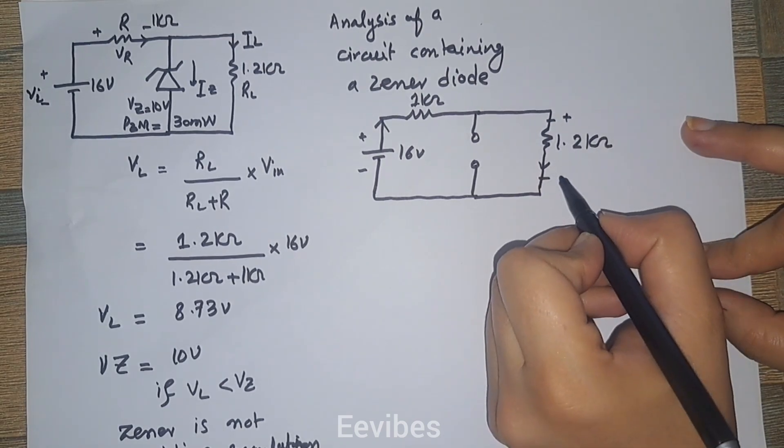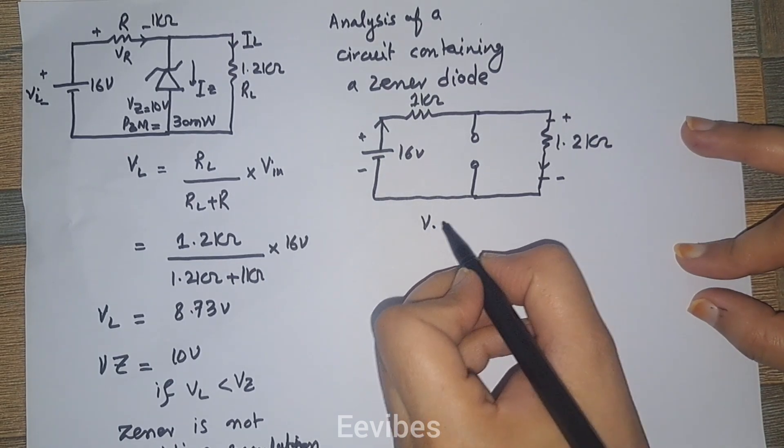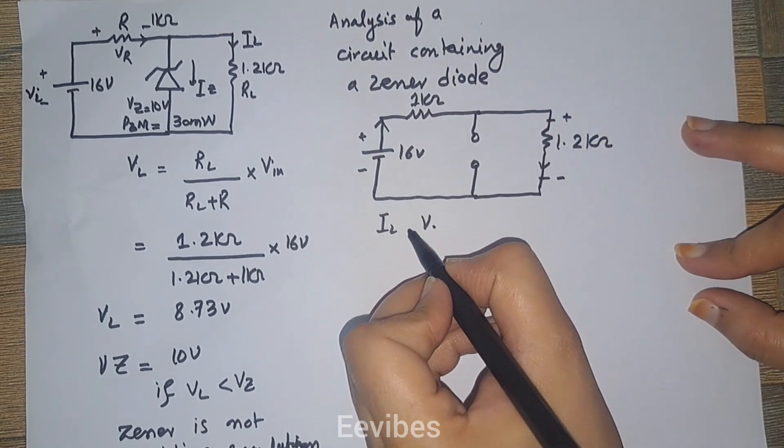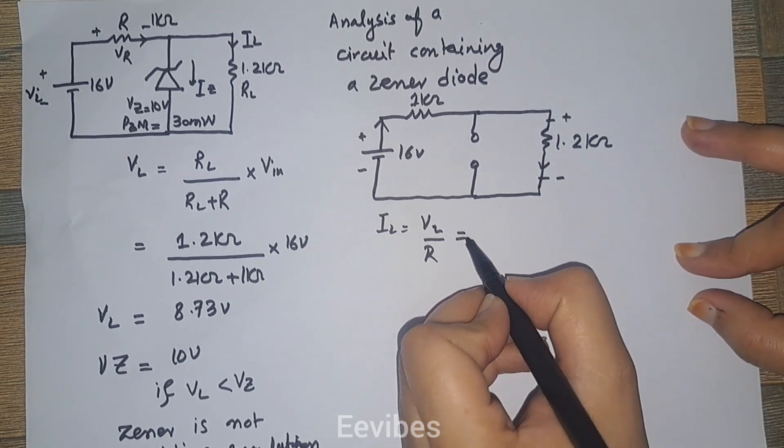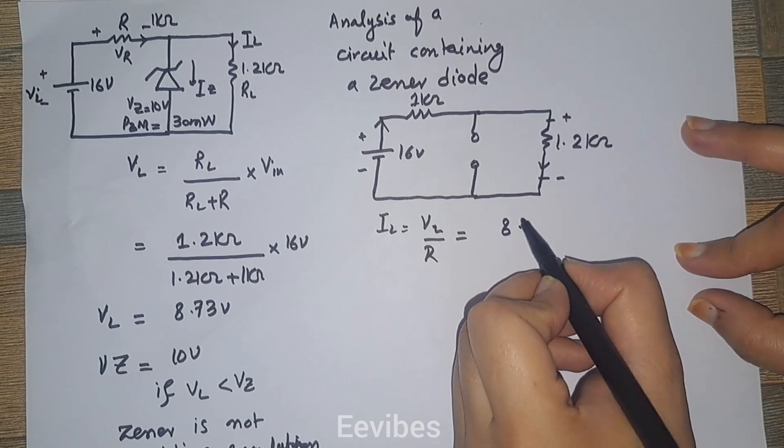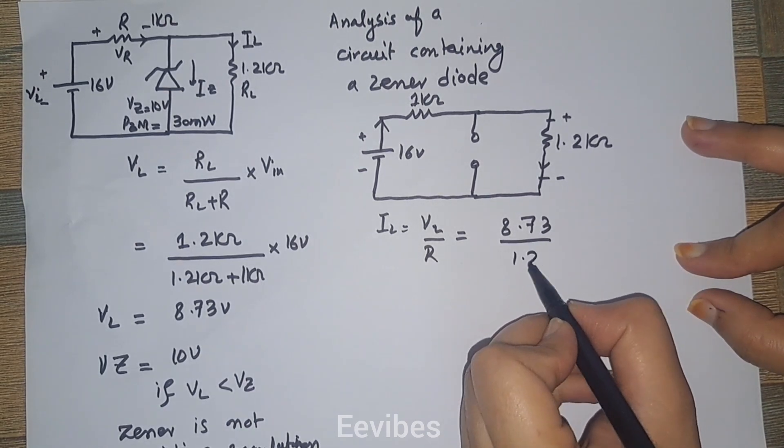Once you know the value of the voltage across this resistor, you can determine the value of IL by applying Ohm's law. I equals VL over R, which equals 8.73 volts divided by 1.2 kilohms.